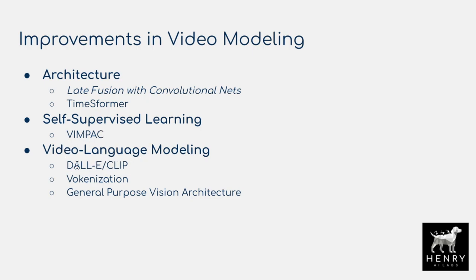In video-language modeling, DALL-E uses the vector quantized variational autoencoder to generate images from language descriptions, which is really impressive. CLIP does zero-shot transfer via contrastive learning, aligning images with natural language descriptions. We also have the Vulcanization paper building on this VidLangKD research, and a general-purpose vision architecture similar to the T5 framework that unifies visual question answering, image captioning, image classification, bounding box detection, and language tasks like the GLUE benchmark into a single architecture.